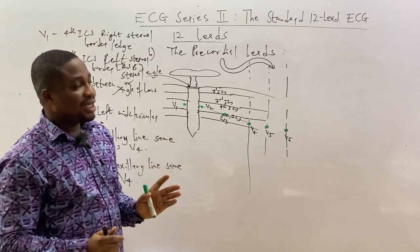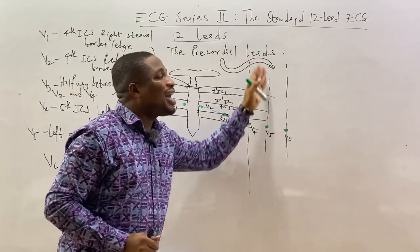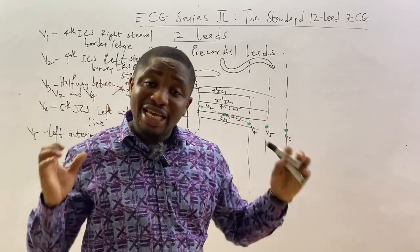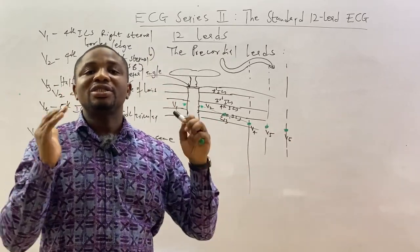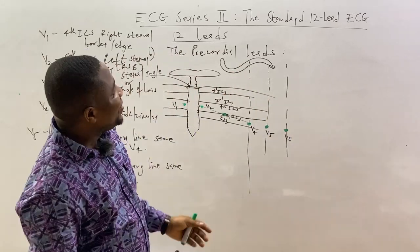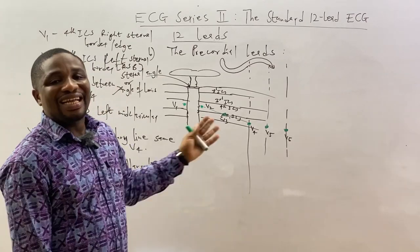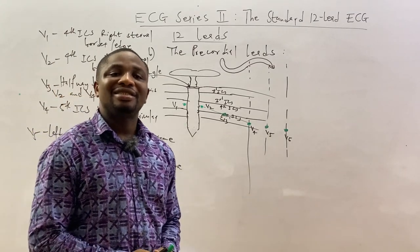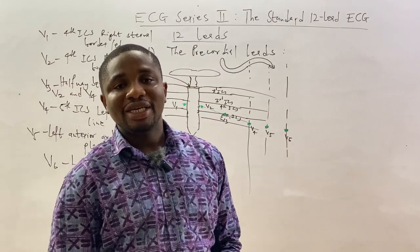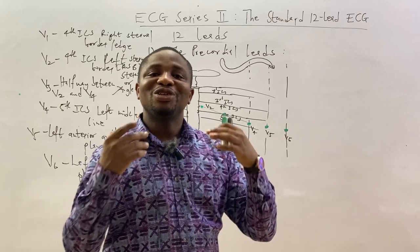V5 is placed in the left anterior axillary line, same plane as V4 — meaning also in the fifth intercostal space. V6 is placed in the left mid-axillary line, same plane as V4, also in the fifth intercostal space.